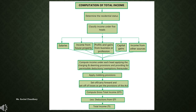After dividing the income, you have to compute income under each head, applying the charging and deeming provisions and providing for permissible reductions and exemptions thereunder. Whatever the permissible deductions and exemptions are available under different heads, you have to compute those deductions and compute income after those deductions.